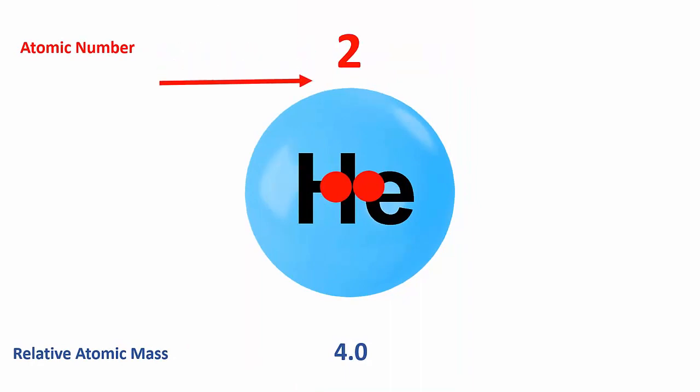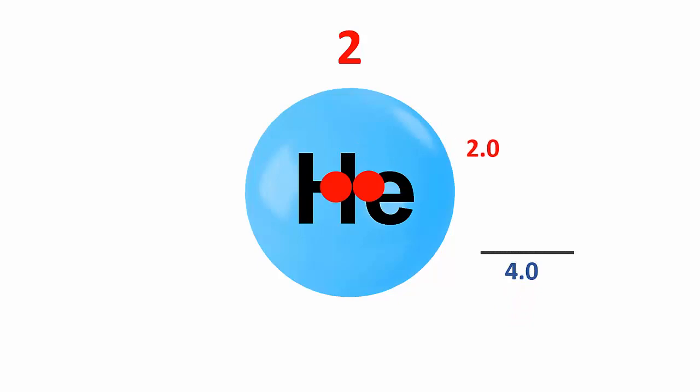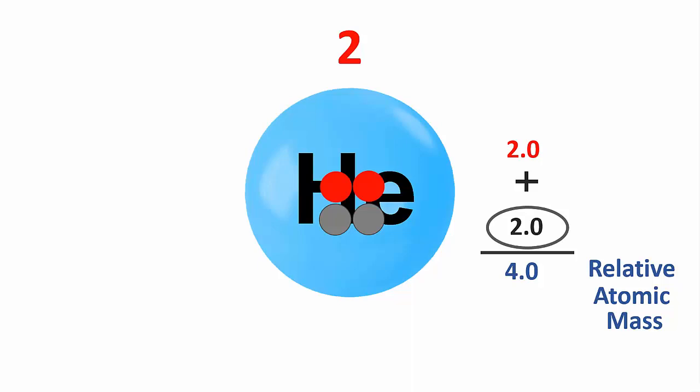A helium atom has 2 protons weighing 2, so they contribute 2 to the mass of the atom. But its overall mass is 4. How many neutrons must it have? Well, the total mass is 4, and this is made up of protons weighing 2 as well as the mass of the neutrons. The neutrons must weigh 2, so there must be 2 neutrons because each weighs 1. The neutrons are just the difference between the total mass and the number of protons, or the difference between the relative atomic mass and the atomic number.